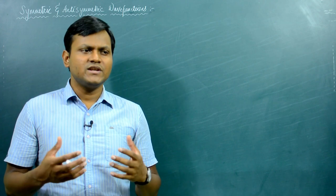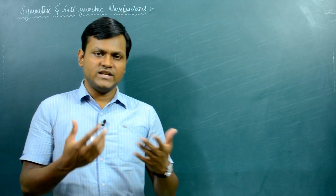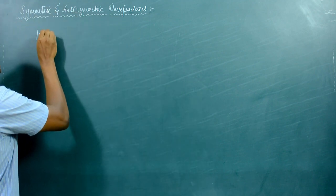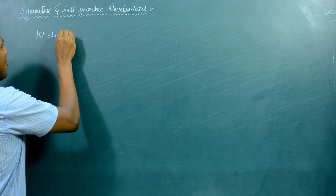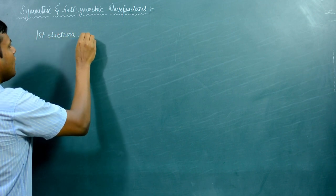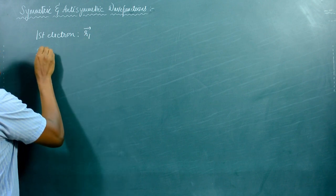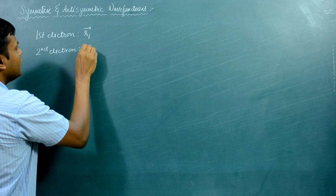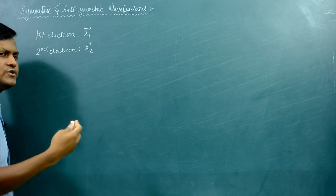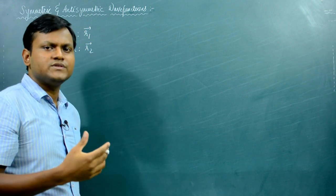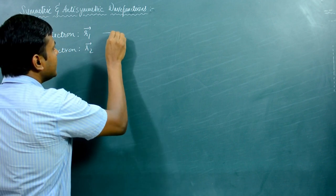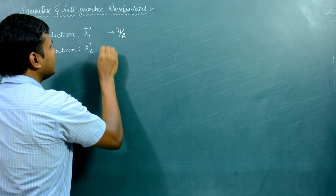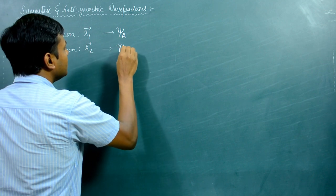These electrons might exist at some position and occupy some quantum state. Let's say we have two electrons: the first electron occupies a position R1, the second occupies a position R2, and both electrons occupy different quantum states — the first occupies eigenstate ψA and the second occupies eigenstate ψB.